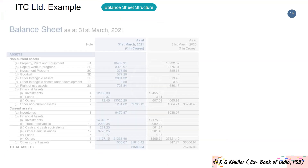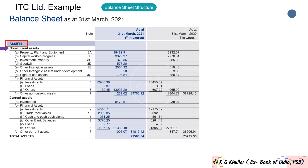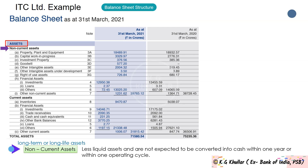Under assets, the first category is non-current assets. Assets are the resources controlled by a company as a result of past events from which future economic benefits are expected to flow to the entity. Non-current assets — also known as long-term or long-life assets — are less liquid and not expected to be converted into cash within one year or one operating cycle. They represent the infrastructure the firm uses in its operations.